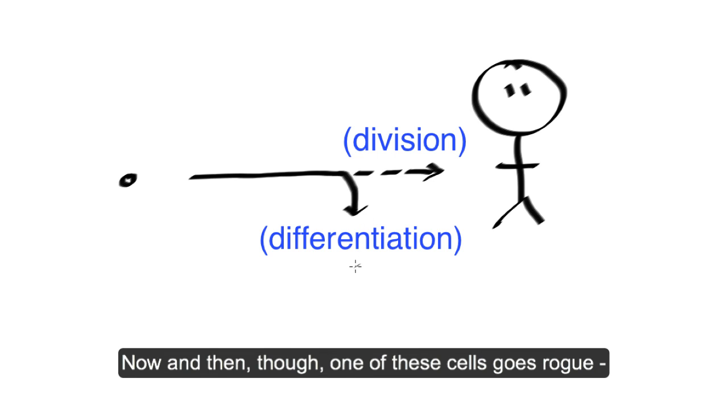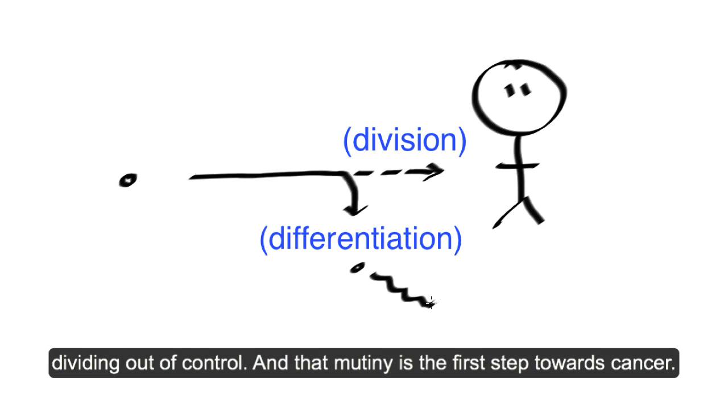Now and then though, one of these cells goes rogue, dividing out of control. And that mutiny is the first step towards cancer.